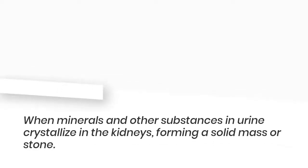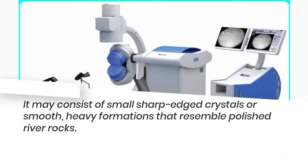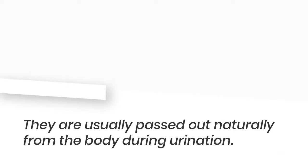When minerals and other substances in urine crystallize in the kidneys, forming a solid mass or stone, it may consist of small sharp-edged crystals or smooth, heavy formations that resemble polished river rocks. They are usually passed out naturally from the body during urination.